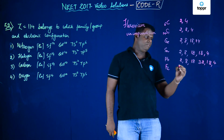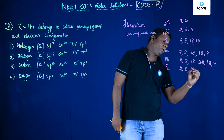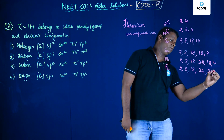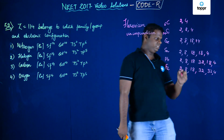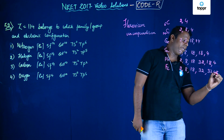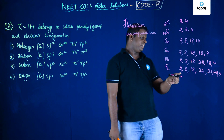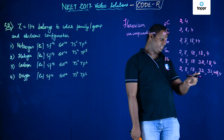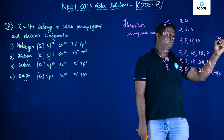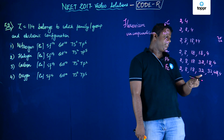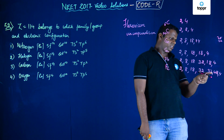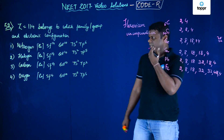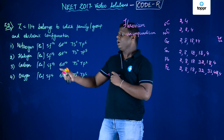Flerovium's electronic configuration is 2, 8, 18, 32, 32, 18, 4. Let's verify: 2+8=10, 10+18=28, 28+32=60, 60+32=92, 92+18=110, and 110+4=114. So the atomic number checks out as 114, confirming it belongs to the carbon family.